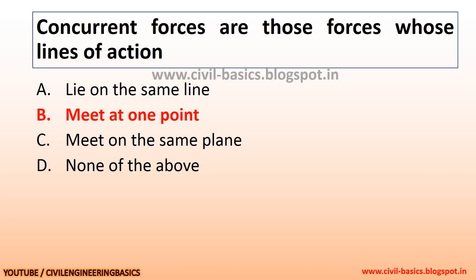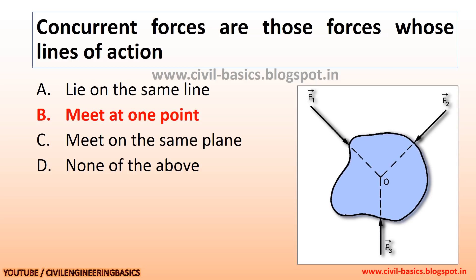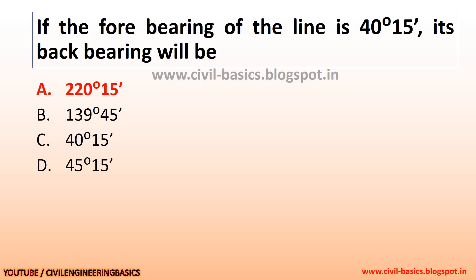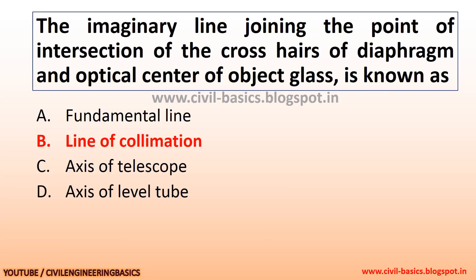Concurrent forces are those forces whose lines of action meet at one point. The imaginary line joining the point of intersection of the crosshairs of the diaphragm and the optical center of the object glass is known as the line of collimation.